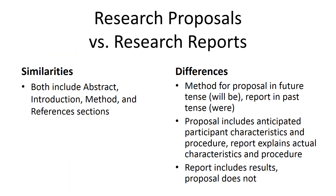In the research context, the structure of a proposal is pretty similar to a research report, but it's important to know the differences. One difference is grammatical. A proposal is written before we carry out the study, so it's written in the future tense, explaining what we will do. The report is past tense. Given that we're talking about what we will do, the content of the method section is also a little different. The proposal anticipates participant characteristics and procedure, while the report includes the actual characteristics and procedure. Along the same lines, the proposal does not include the results and discussion sections, since we don't have the data for those sections.